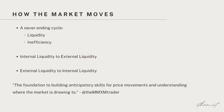Before I get into internal and external range liquidity, we first need to understand how the market books in terms of ICT's algorithmic theory. To my knowledge, the market is only ever doing one of two things: purging liquidity or balancing inefficiencies in the market. If we understand this, then we are already at a great advantage as we've literally just simplified exactly what to look for — either a high, a low, or an imbalance in the market.